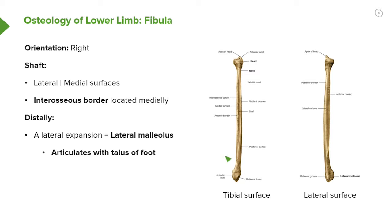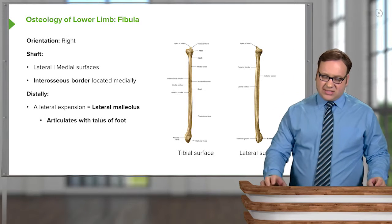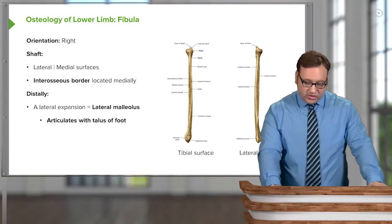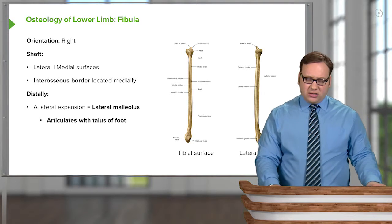Distally we have a lateral expansion — this is the lateral malleolus. Here we can see the malleolar fossa and the lateral malleolus. Combined with the medial malleolus, this forms the articulation with the talus of the foot to form the ankle joint.